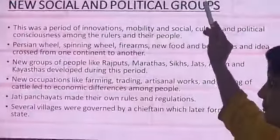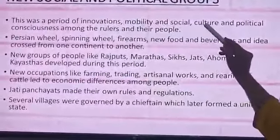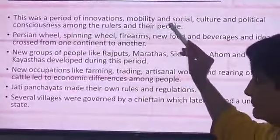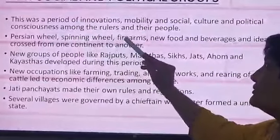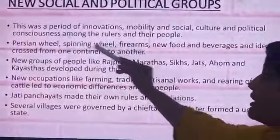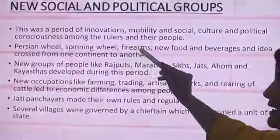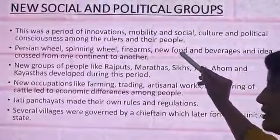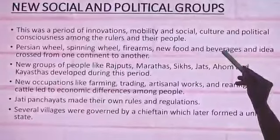New social and political groups: this was a period of innovations, mobility and social, cultural and political consciousness among rulers and the people. The Persian wheel was introduced, the spinning wheel was introduced, and firearms were introduced. These technologies were used for irrigation, for producing cloth and for combat. New foods like chilli, potatoes and corn were introduced during this period, and beverages like tea and coffee were also introduced.